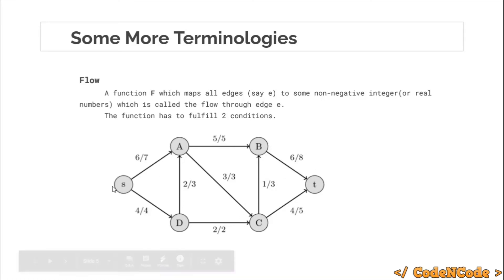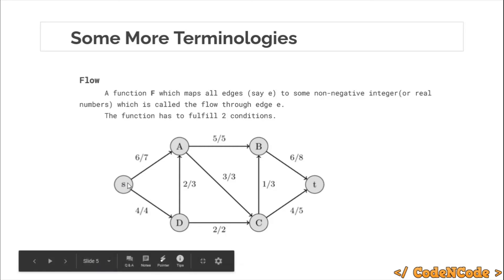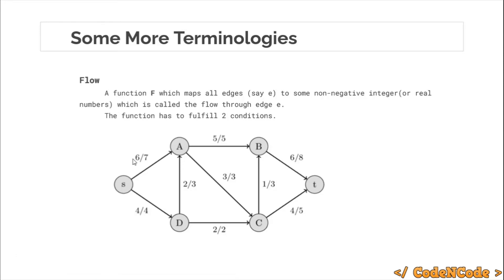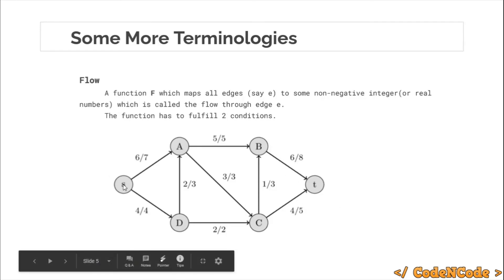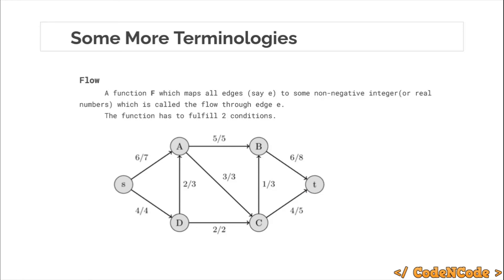This graph represents the maximum flow. The maximum flow is the maximum amount that can flow from source to sink. You can see 6 units flow through one edge from source and 4 units through another, totaling 10 units passing through the source. So the maximum flow achievable in this case is 10.